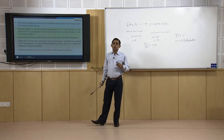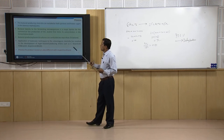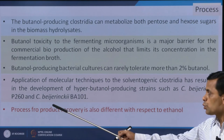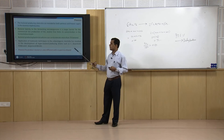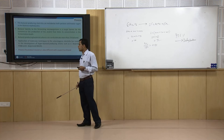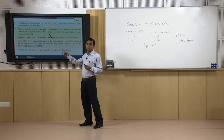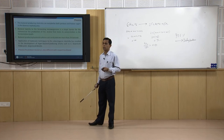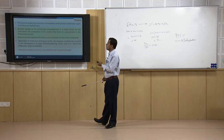Efforts are underway to develop new strains resistant to butanol concentration in the media. Application of molecular techniques to solventogenic consortia has resulted in hyperbutanol-producing strains such as Clostridium beijerinckii P260 and C. beijerinckii BA101. These genetically modified bacteria have higher butanol production capacity. Since butanol concentration in the media is only about 2 percent — much less than for ethanol — it must be removed from the media, and the separation methods differ accordingly.